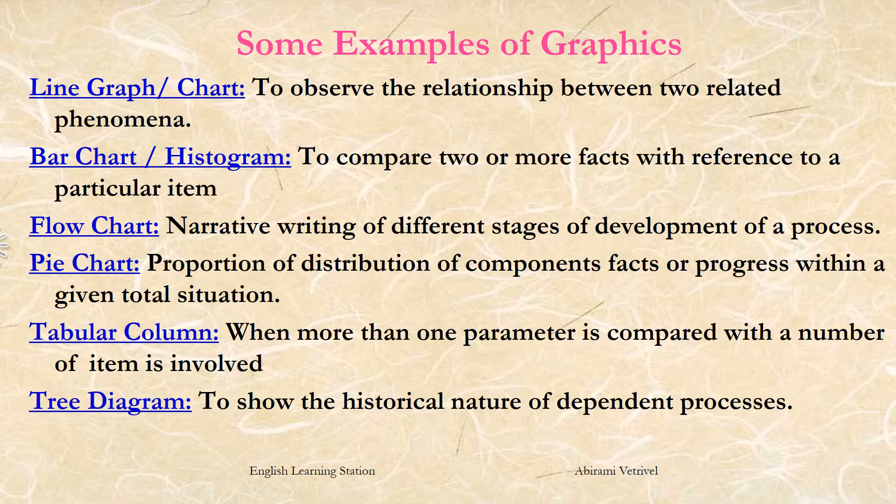The second type of graphical representation is the bar chart, which is otherwise called a histogram. These types of bar charts are used to compare two or more facts with reference to a particular item. Bar charts, bar graphs, or histograms are used to show relationships between different data series that are independent of each other.